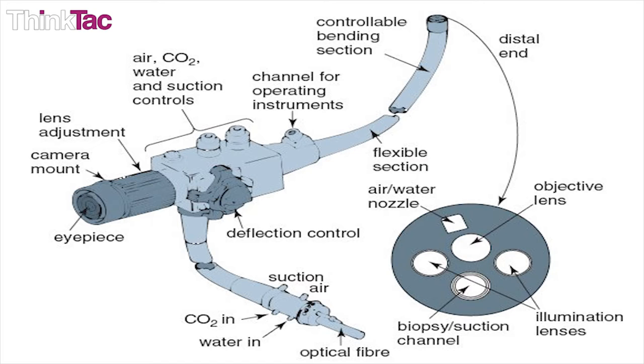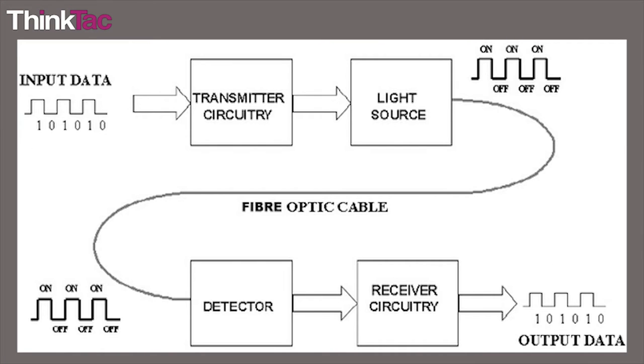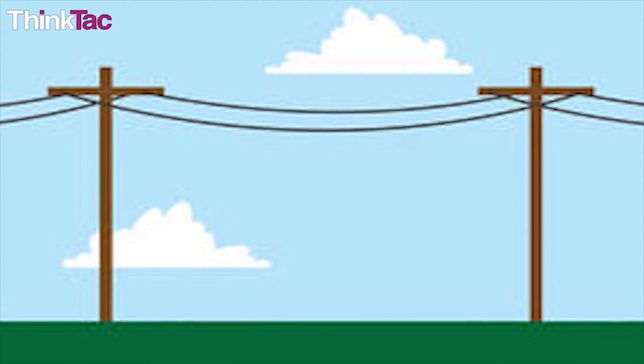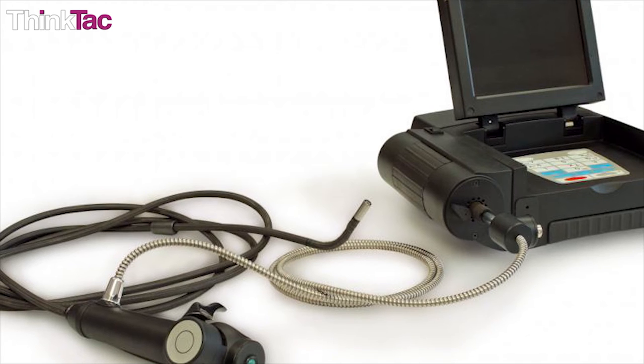However, the fiber optic cables used to carry telephone signals do so in binary form. These are used to carry data over long distances whereas in case of endoscopes information is carried over short distances.